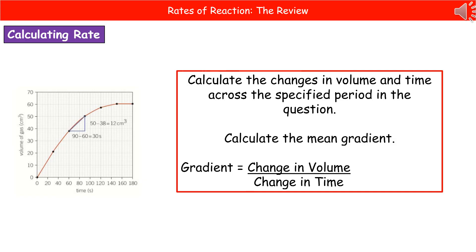You then work out the change in volume between those two points. You work out the change in time, and then you just divide your change in volume by the change in time. So we're calculating the mean gradient at that point.